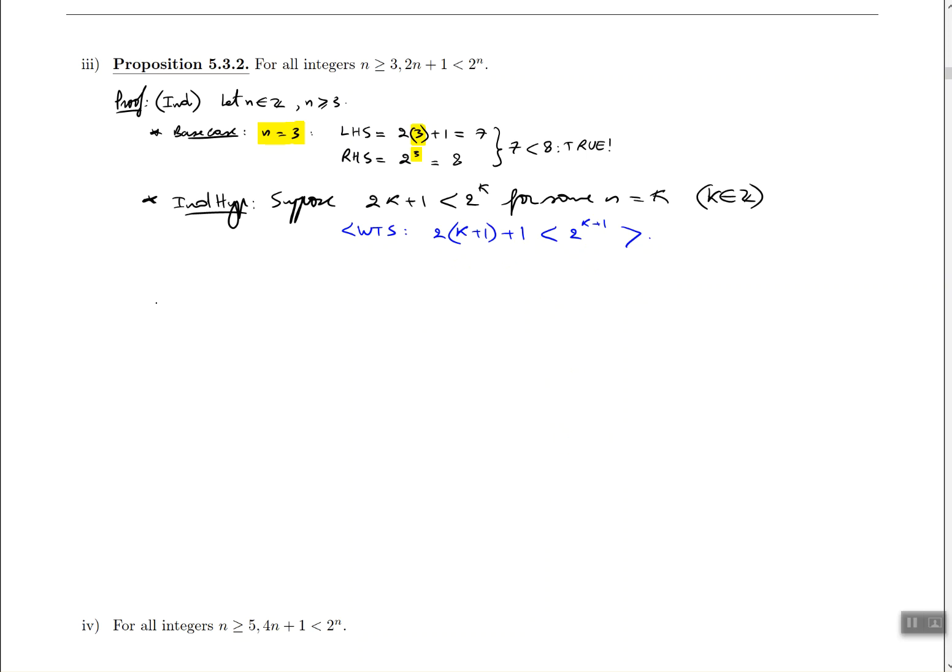So starting with what I know. We assume that 2k plus 1 is less than 2 to the power of k. So we assume that 2 to the power of k is greater than that quantity. And remember I saw 2k plus 3 here. So how can I get 2k plus 3? Well, I can get 2k plus 3 by adding to this side of the equation a 2.